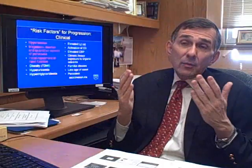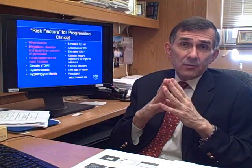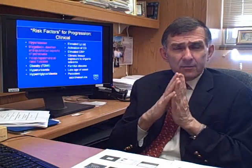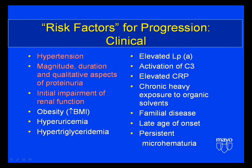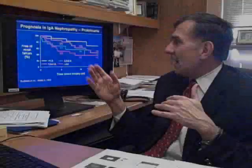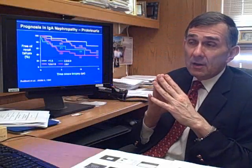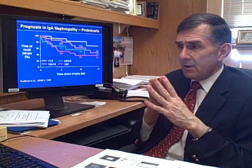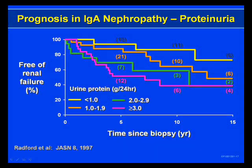Can we predict which patient with IgA nephropathy is going to progress? The main indicators are the degree of proteinuria, the degree of hypertension, and the degree of kidney function impairment. Studies done here at Mayo Clinic by my predecessor, Dr. Donadio, also show that the more protein you have in the urine, the worse your prognosis will be. The less protein you have in the urine, the better your prognosis. The same is true for the degree of kidney function.